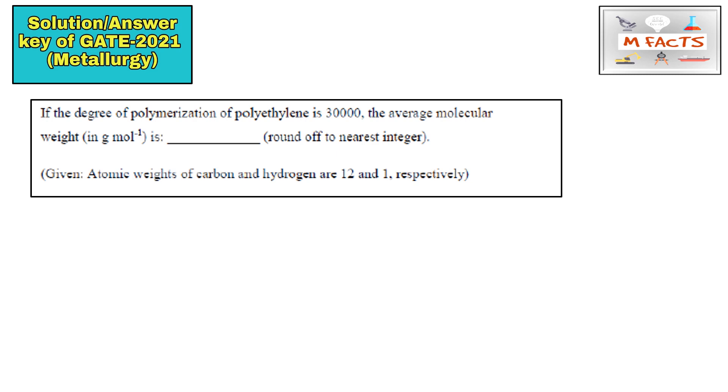The next question is from polymer part. If the degree of polymerization dp is given for polyethylene, so 30,000 basically, the average molecular weight, we need to find the average molecular weight that is Mw. How to find this average molecular weight while they are given the degree of polymerization? This is polyethylene. This formula is C2H4, means this is having for one monomer 28.